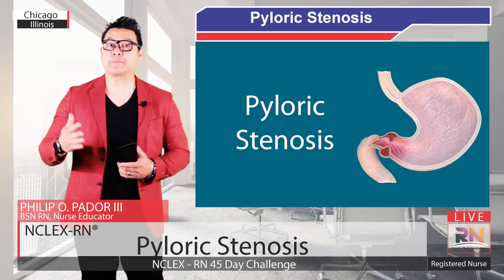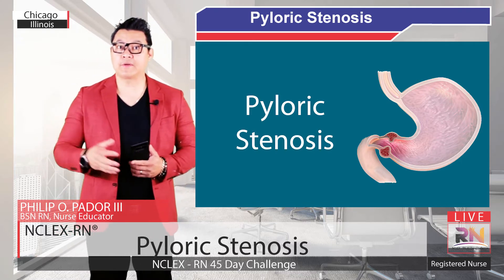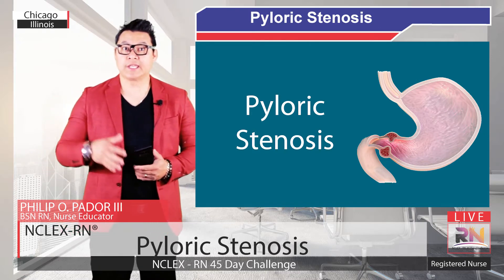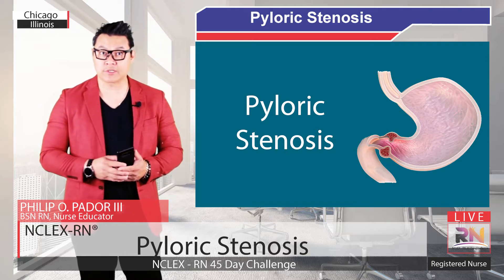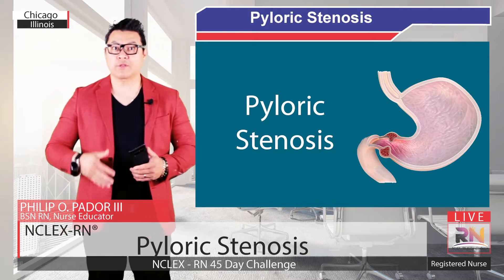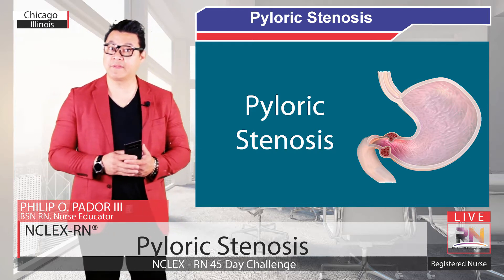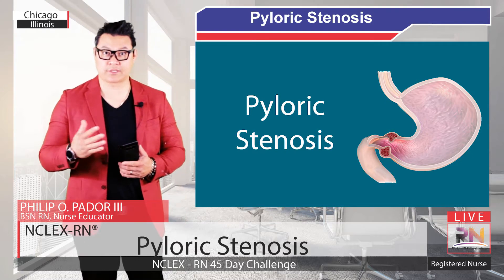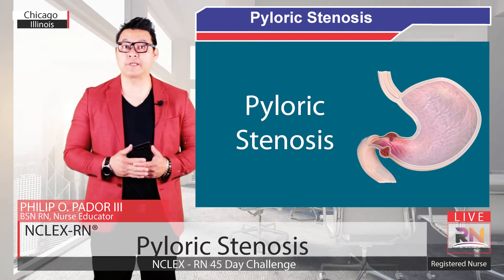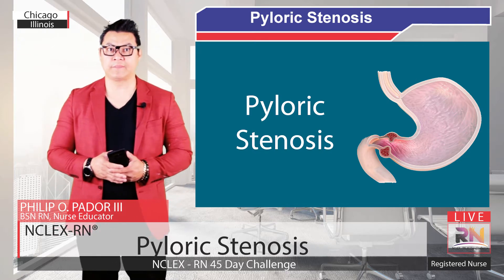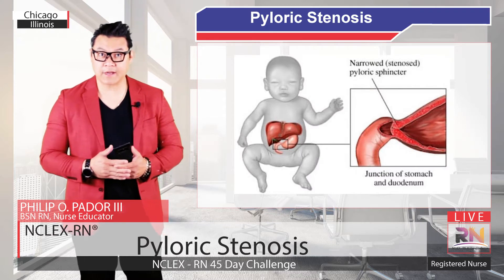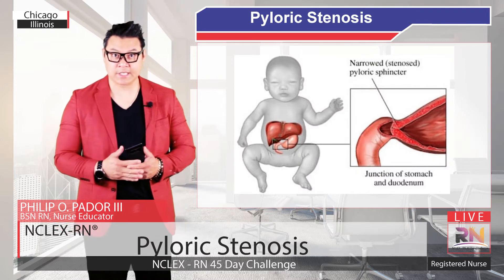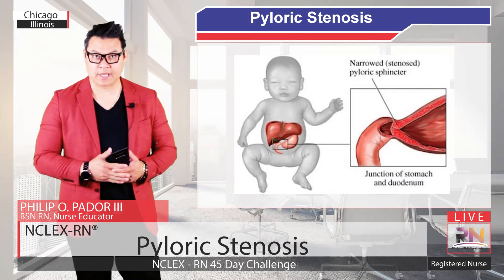What is pyloric stenosis? Pyloric stenosis is a hypertrophy of the pyloric muscles with elongation, thickening, and near-complete obstruction of the gastric outlet. It was first described as early as 1717 in Europe, and by 1887 the pathology was understood. This is the most common cause of metabolic alkalosis in infancy. You can see on the diagram the hypertrophy of the muscles where the pyloric stenosis obstructs the gastric outlet.